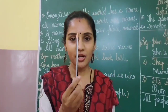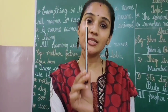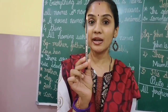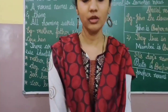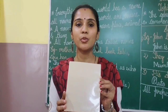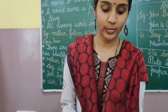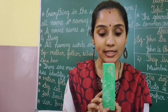What is this? This is a pencil — an Apsara pencil. What is this? A book. What is this children? This is a duster.